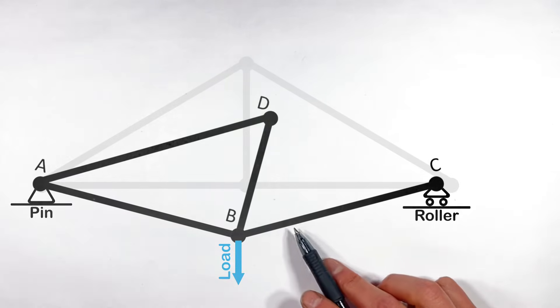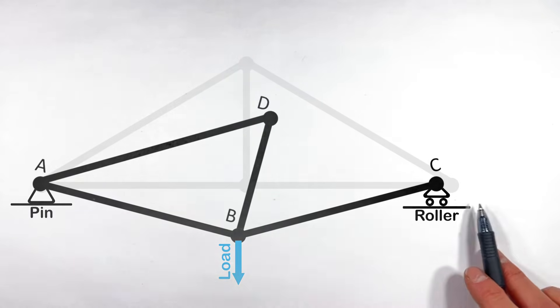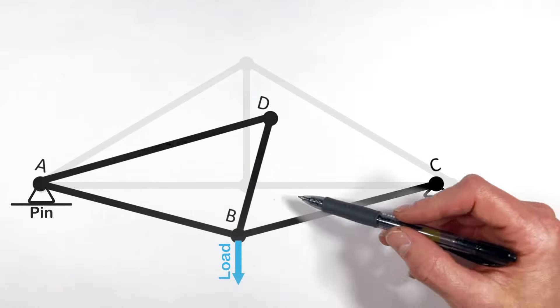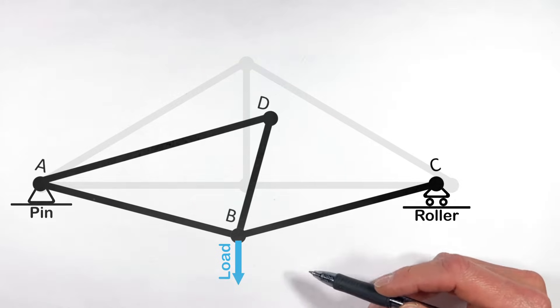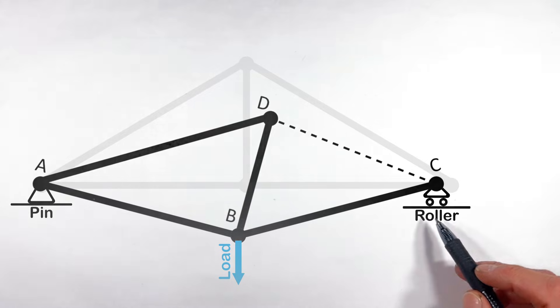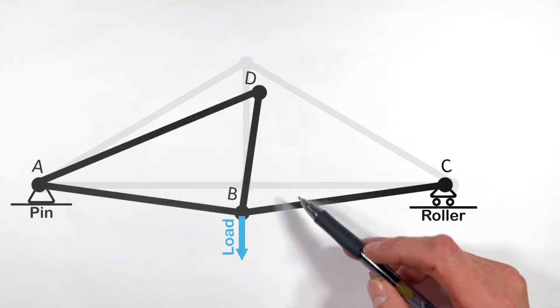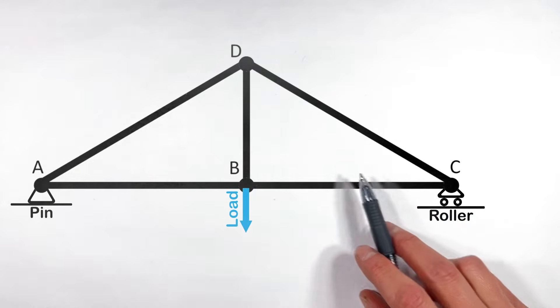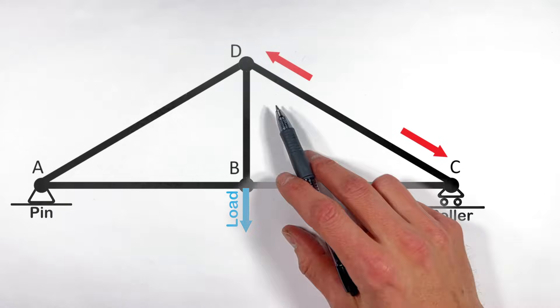And as a result, this beam right here, BC, would get drug off to the left. And you can see, as this entire assembly rotates downward or is pulled downward by the load, the distance from D to C shrinks. Really what that means is in order to hold this entire truss up, this member CD actually has to be pushing these two joints apart.